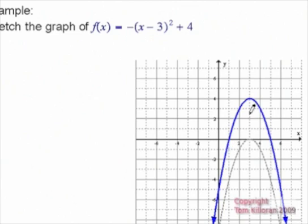And this is our final graph of this function that is flipped upside down. It's moved to the right 3 units. So you'll see 1, 2, 3 units. And it's moved up 4. 1, 2, 3, 4.